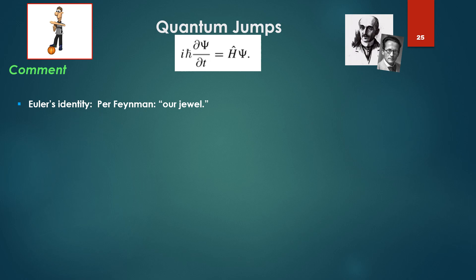Euler's identity. For Feynman, our jewel, a jewel for physics. So Euler's formula, as opposed to identity, is e^(ix) = cos x + i sin x. When x equals π, e^(iπ) = -1. This is Euler's identity.